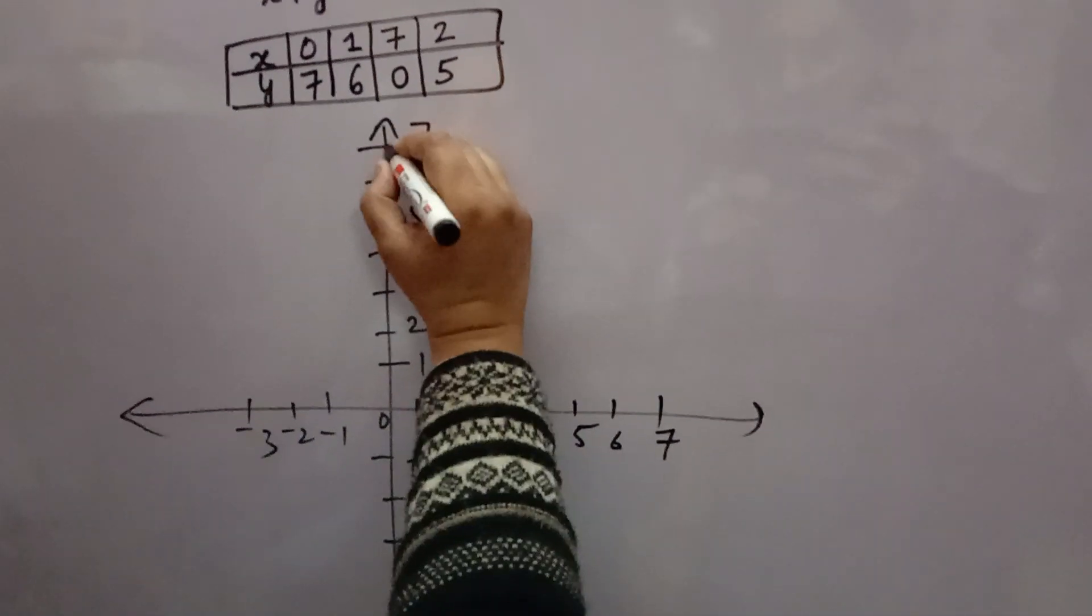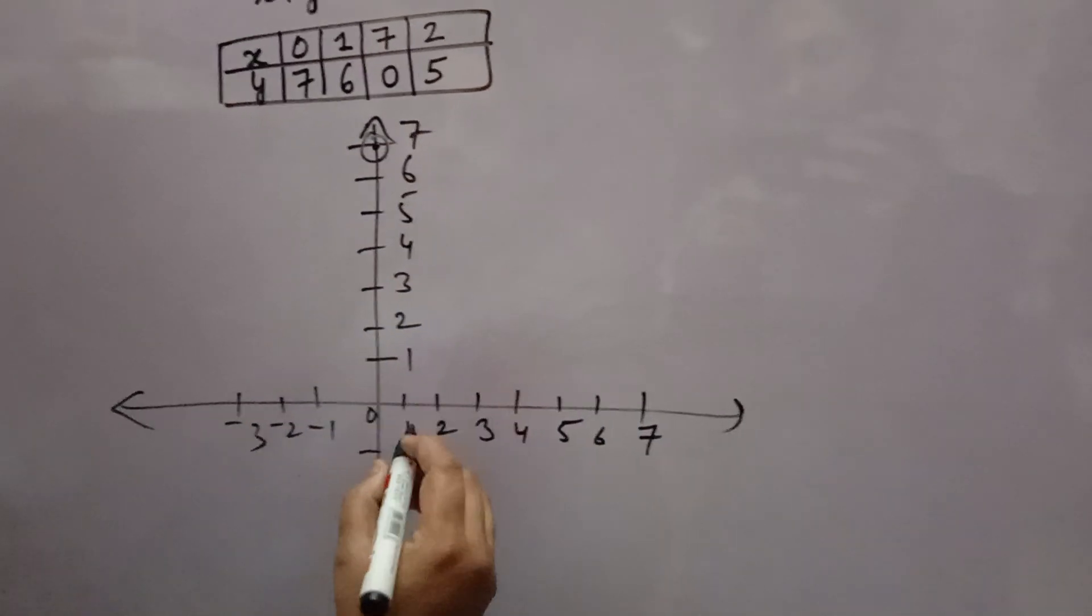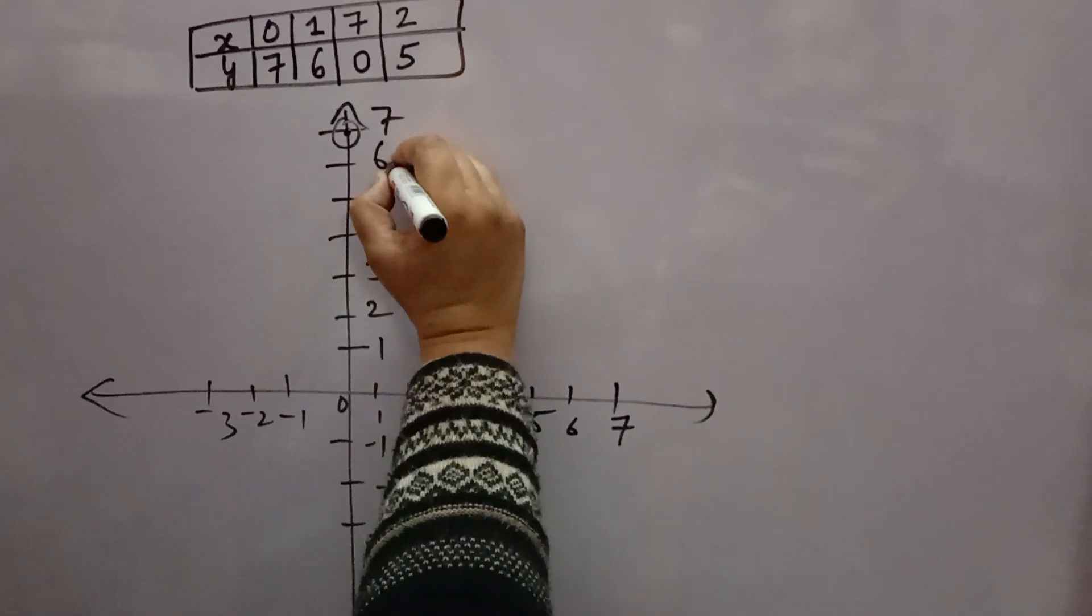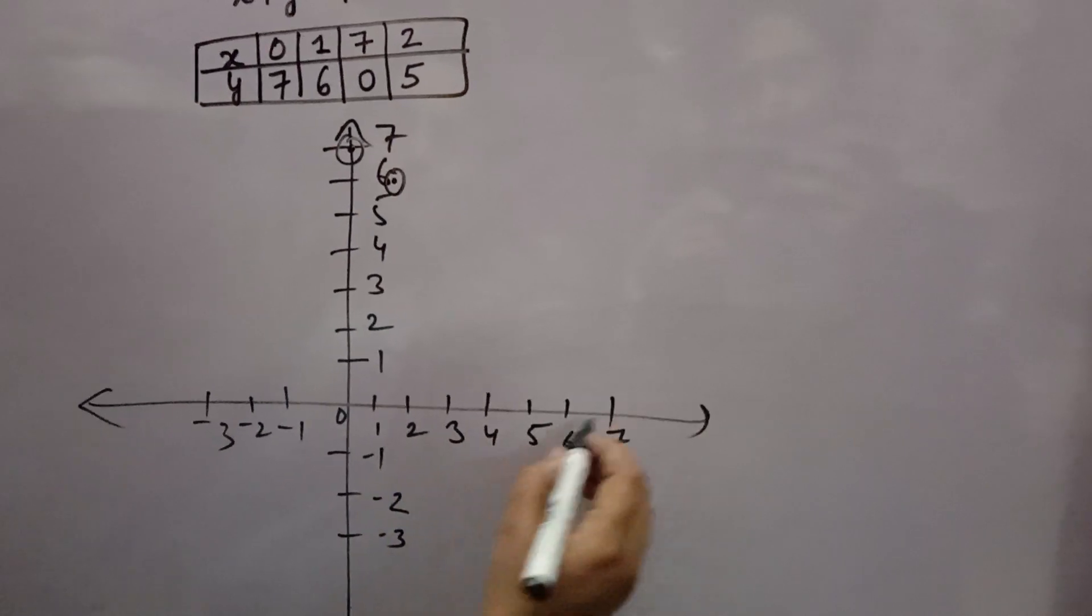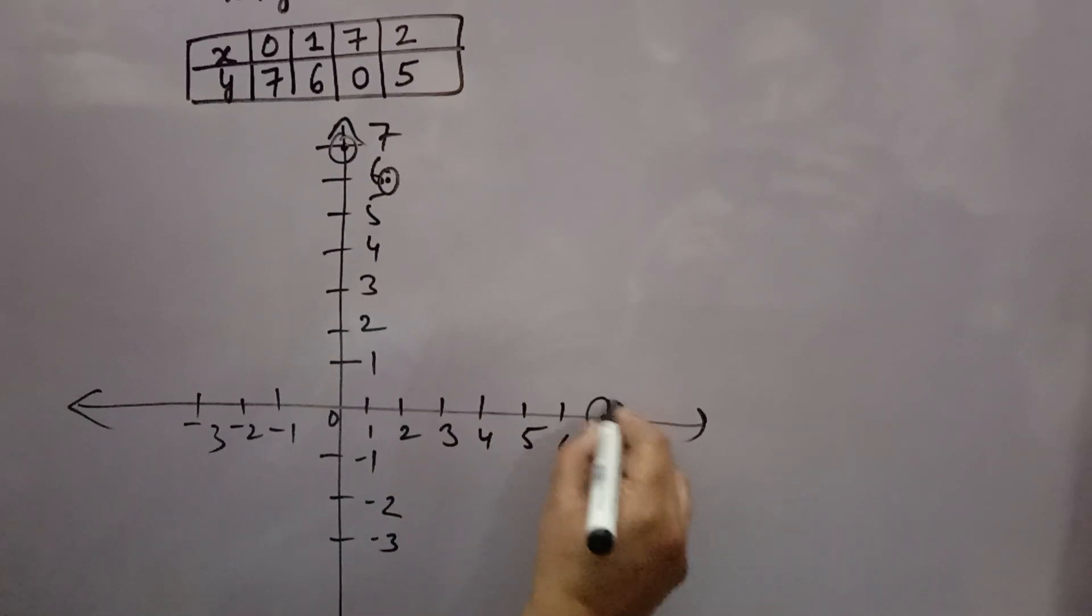Now when x is 0, y is 7, so one point will be here. When x is 1, y is 6, so one point will be here. Then when x is 7, y is 0, so one point will be here.